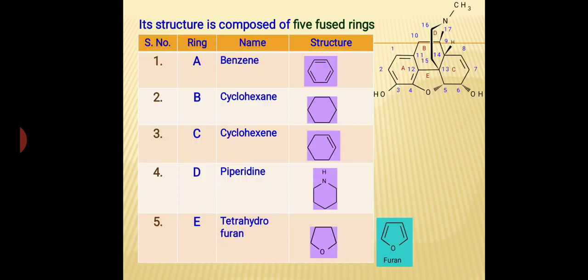The structure of morphine is composed of 5 fused rings. Ring A is an aromatic benzene ring. Ring B is cyclohexene. Ring C is cyclohexene. Ring D is piperidine. Ring E is tetrahydrofuran. For reference, the structure of furan is shown, and if we do complete hydrogenation of furan, it will be converted into tetrahydrofuran, requiring 4 hydrogen atoms — that is why ring E is tetrahydrofuran.